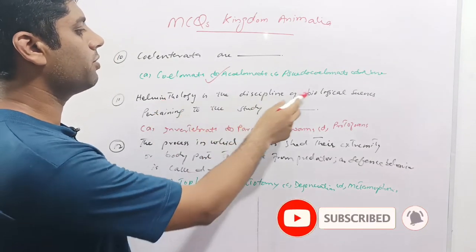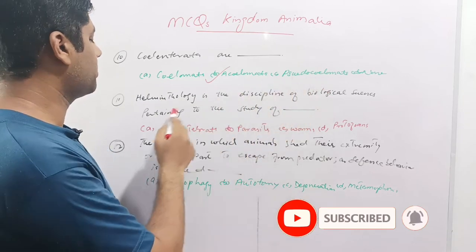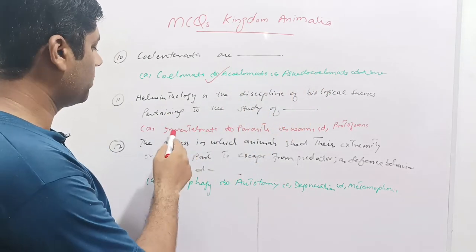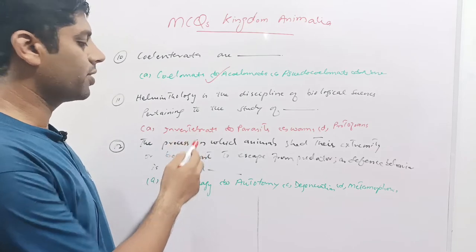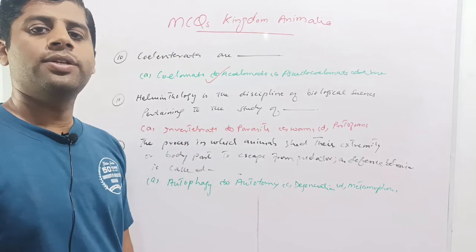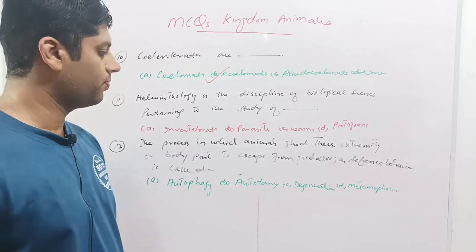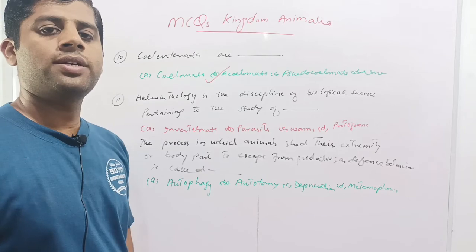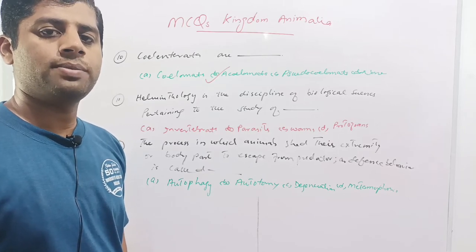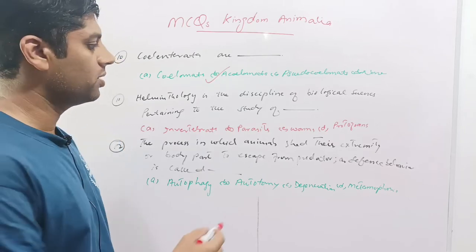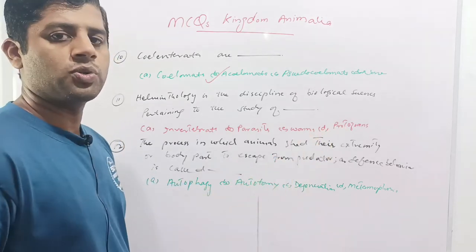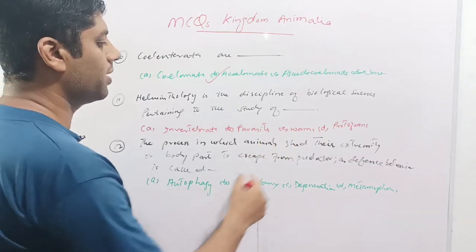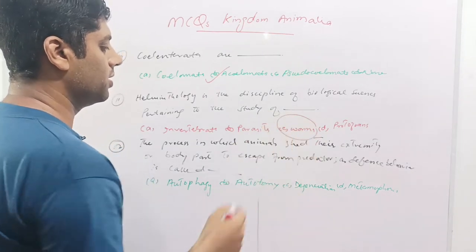Next question: helminthology is the discipline of biological sciences pertaining to the study of what? Invertebrates and vertebrates are studied in taxonomy. Parasites are studied in parasitology. Protozoans are studied in protozoology. Worms — the study of worms is called helminthology, so the correct option is C.